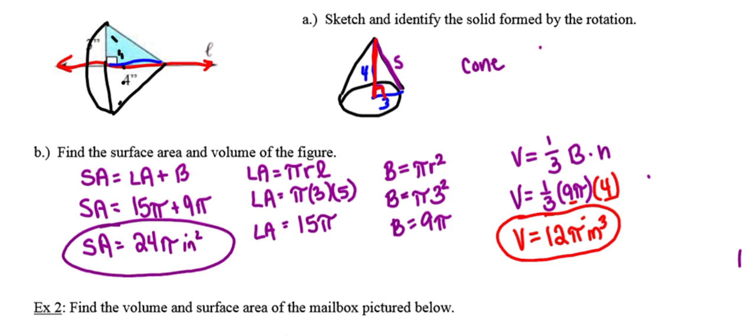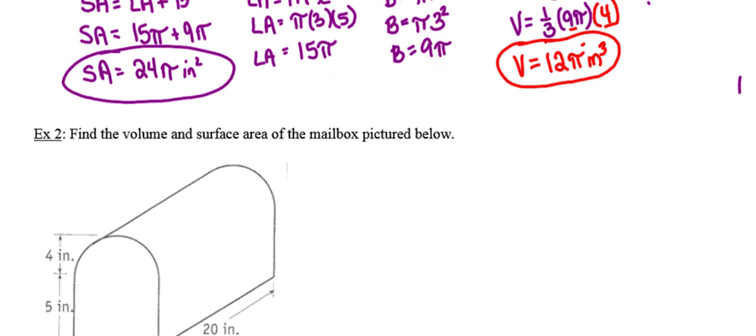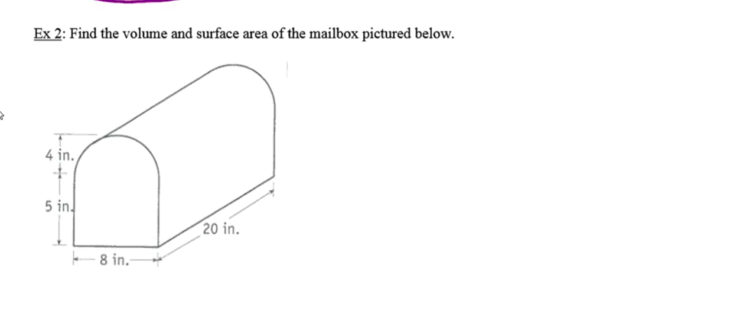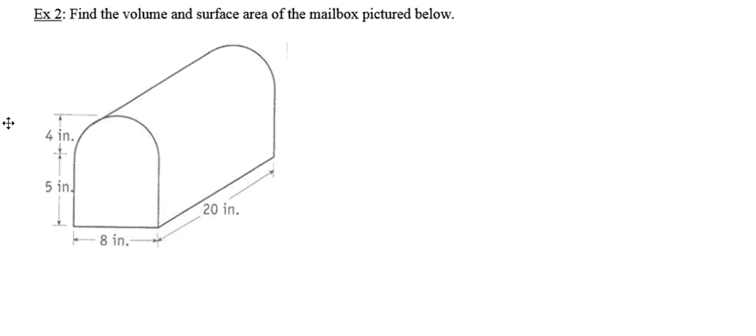Now let's move on to example 2, the mailbox. We need to find both the volume and the surface area of the mailbox. The mailbox shape doesn't resemble any single three-dimensional figure we have formulas for, so similar to composite area problems, I'm going to divide it into two pieces: half of a cylinder on top and a rectangular prism for the base at the bottom.